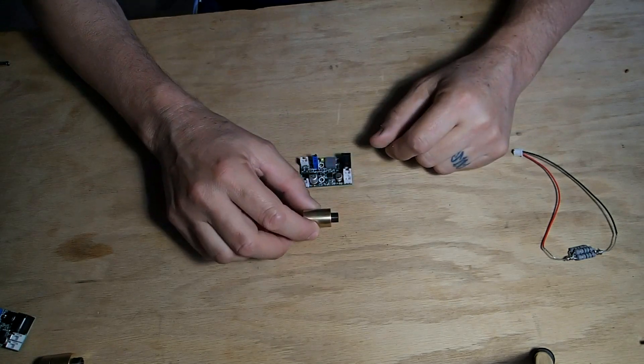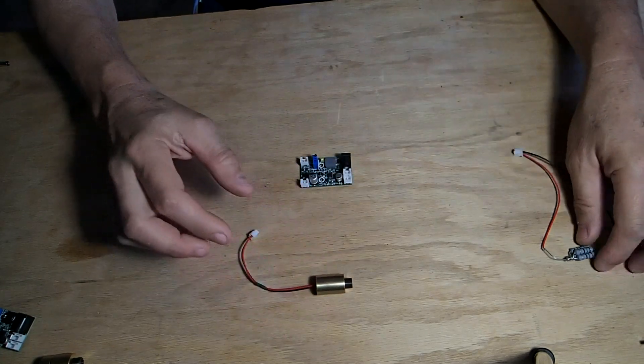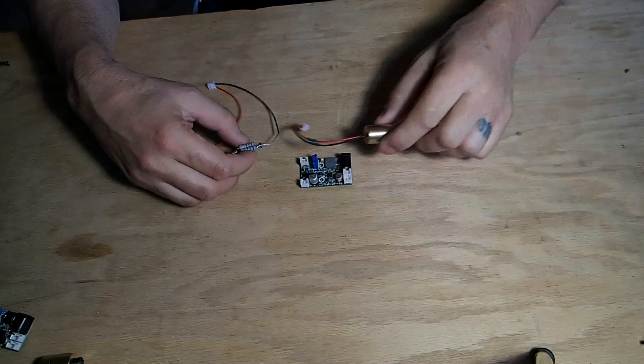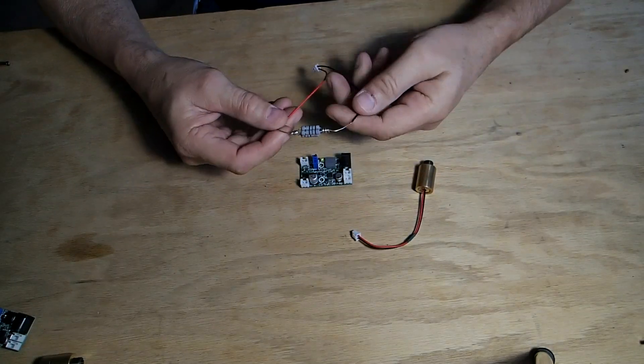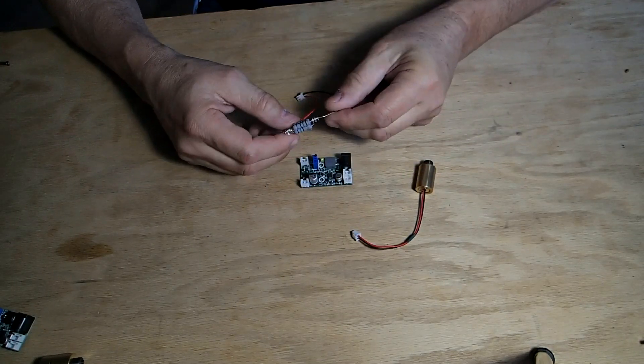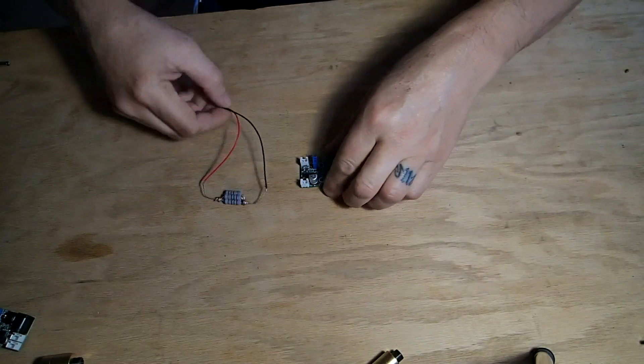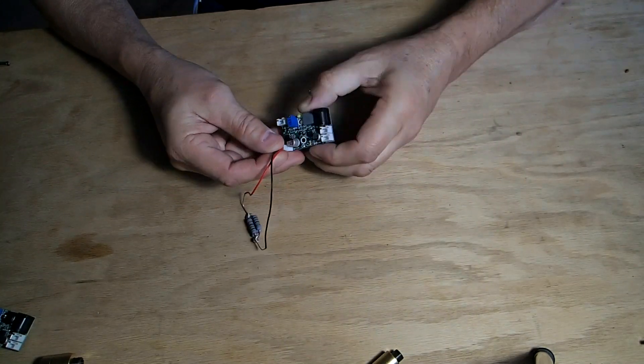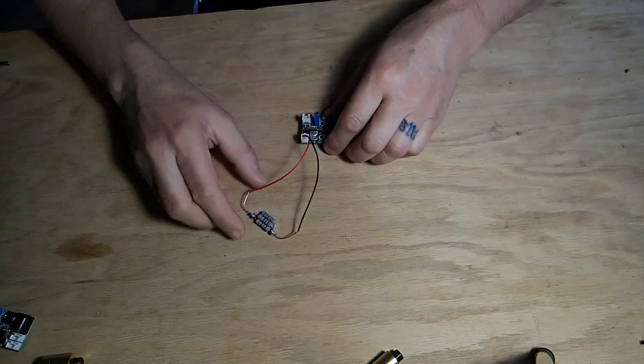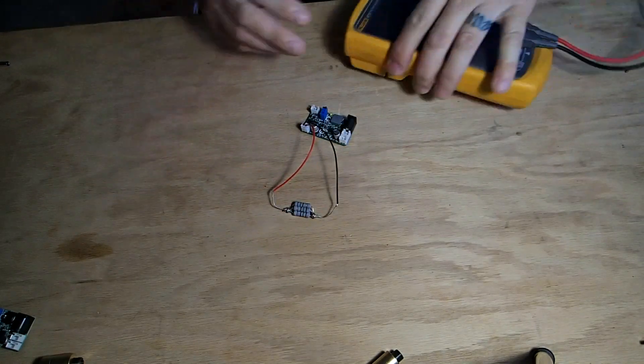To adjust this current for this, what we'll do is we'll simulate this laser diode here with these four 15 ohm resistors in parallel. We'll just simply plug these into here and we'll test it this way first.